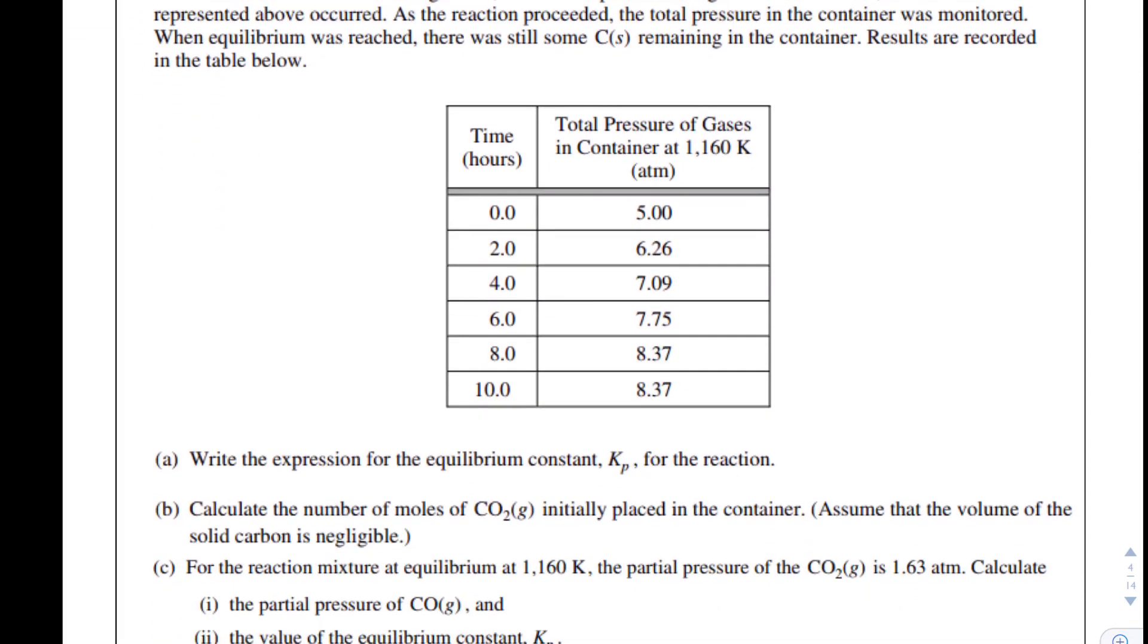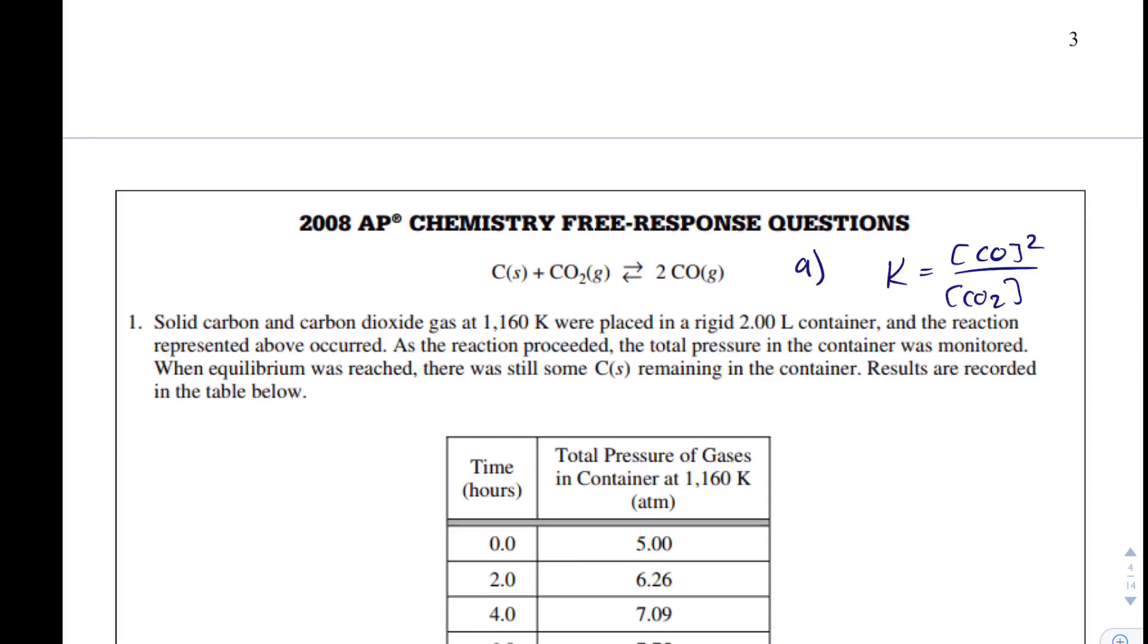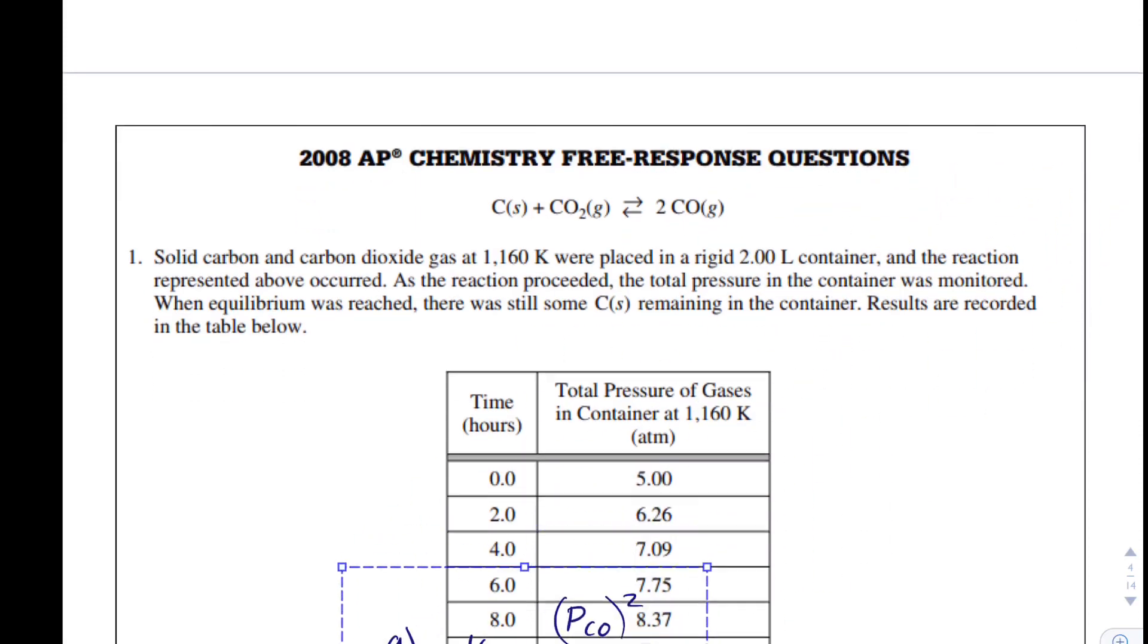And also, they asked us for Kp. So we know that when we use Kp, we need to use partial pressures. So what we would say is Kp equals the pressure of carbon monoxide squared divided by the pressure of CO2. And I'm going to move that down for part A.